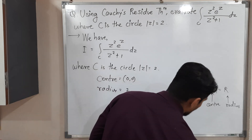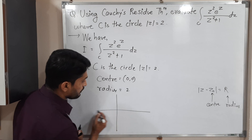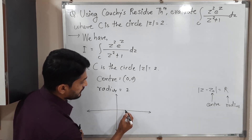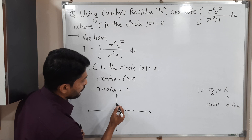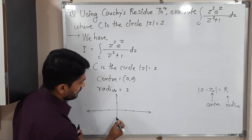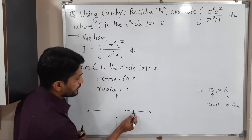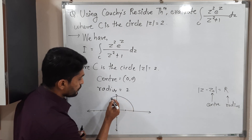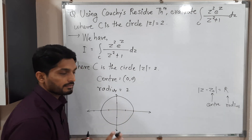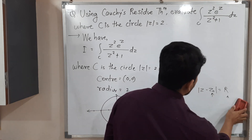Let me draw the circle. We have the imaginary axis and the real axis. With some scalings — 1, 2 and −1, −2 on both axes — the circle with center (0,0) and radius 2 looks like this. This is a rough sketch.